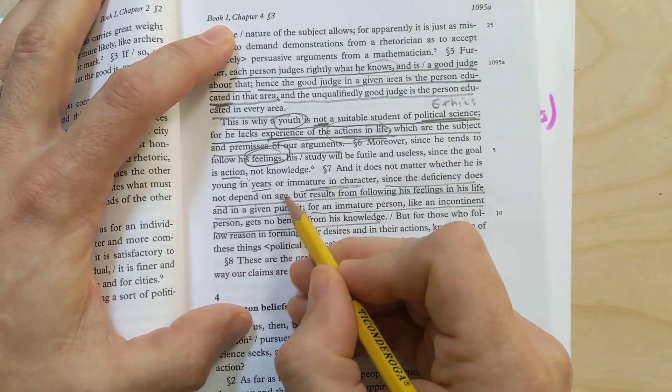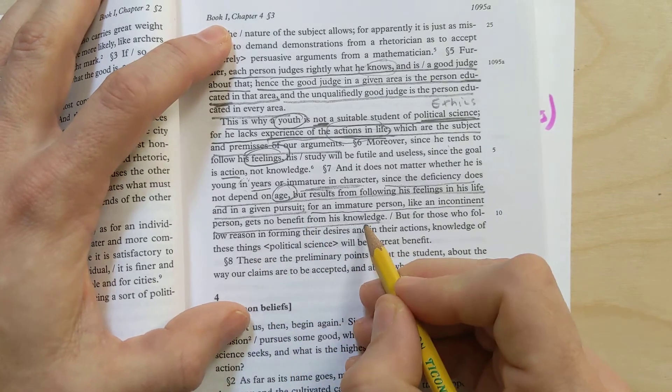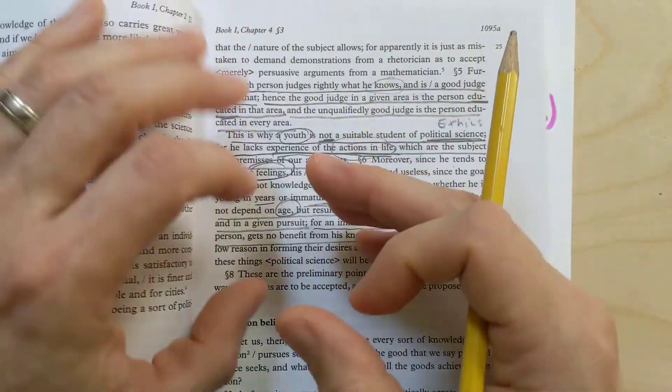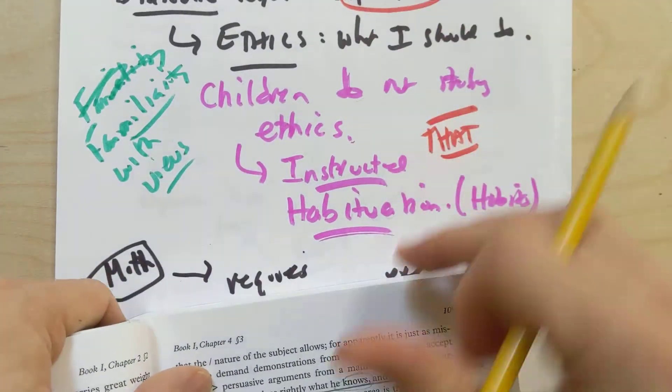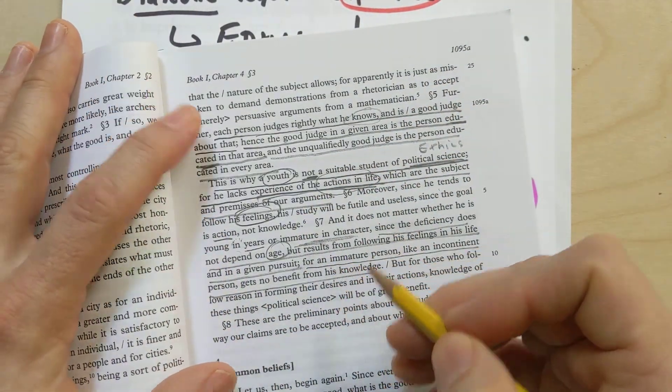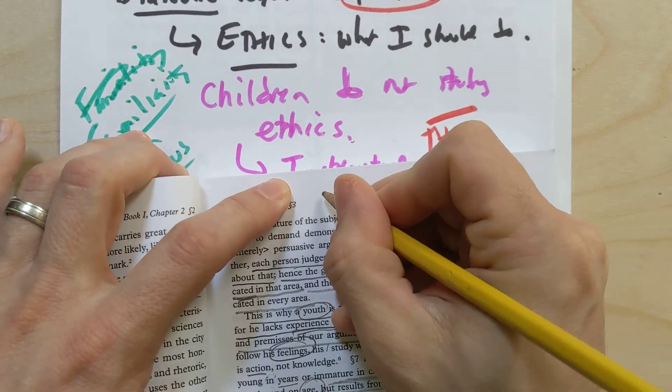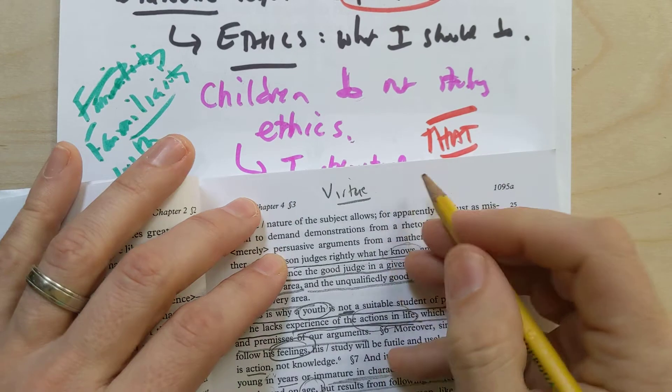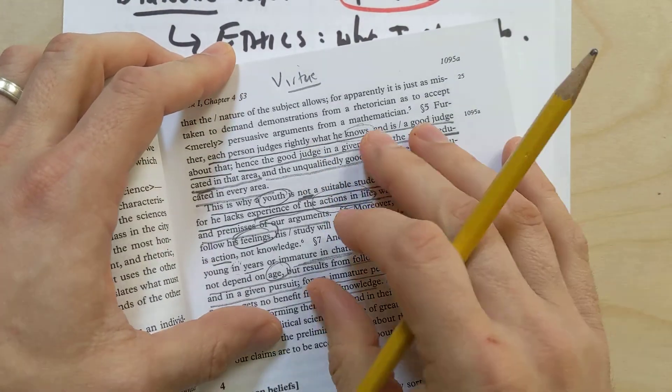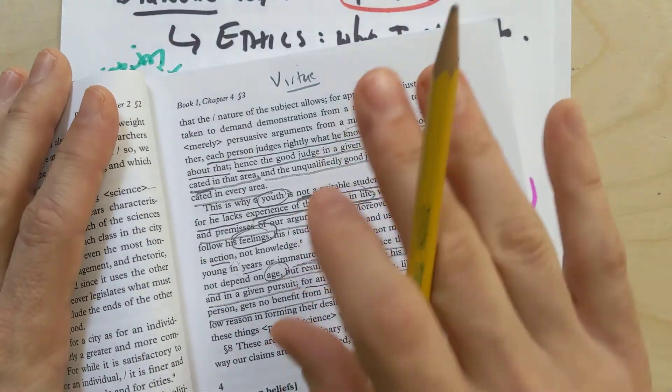It says, since the deficiency does not depend on age, but results on following his feelings in his life and in a given pursuit. For an immature person like an incontinent gets no benefit from his knowledge. Aristotle does mean very specifically that you need to have experience with life. But in order to actually then take that knowledge and examine it in terms of the truth of ethics, and then to have that truth actually bear out in your life to make you a good person, you need to not only have that experience, but you have to have the character to act on that. And that's going to be fundamental when we start to talk later on about the nature of virtue. You'll see it'll sort of culminate in talking about how the best life that we can live is ultimately a life of virtue. It's going to involve having a certain kind of understanding, which will in part come from experience and knowledge, but also having a certain kind of character to act on that knowledge.